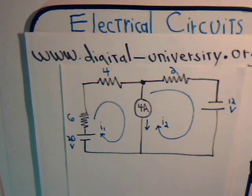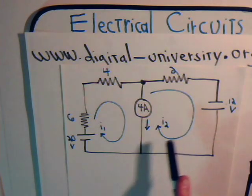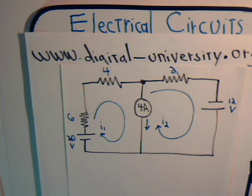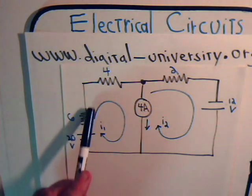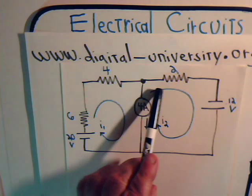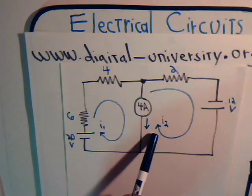We can start the problem by treating each part of these circuits as if they support independent mesh currents going through the circuit in a clockwise direction. Here we have mesh current I1 and mesh current I2.